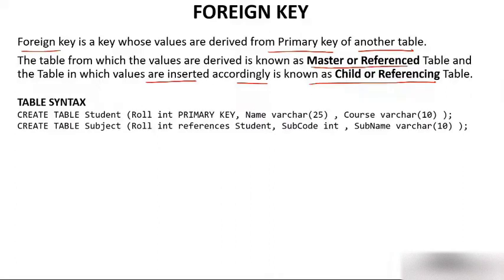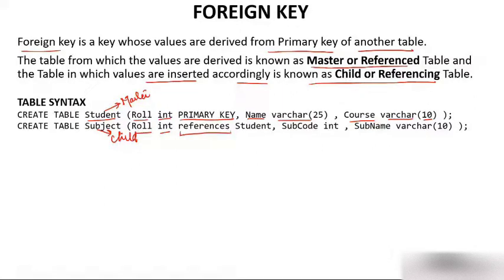Let's see the syntax of the master and child tables. The master table is 'student' with a column 'role number' of data type integer as the primary key, a column 'name' of varchar size 25, and 'course' of varchar size 10. The child table 'subject role' also has a 'role' column of data type int that references the student table's 'role' column — making role a foreign key in the child table, while it was already a primary key in the master table.